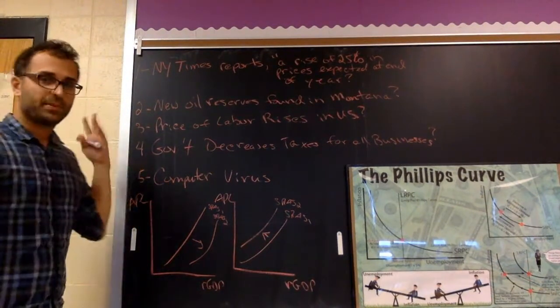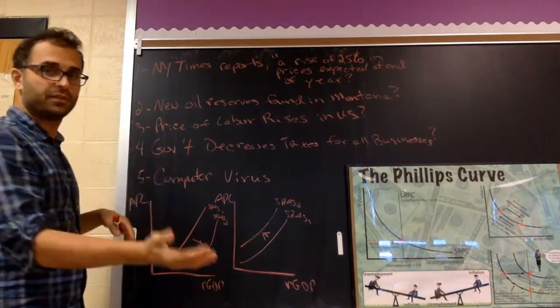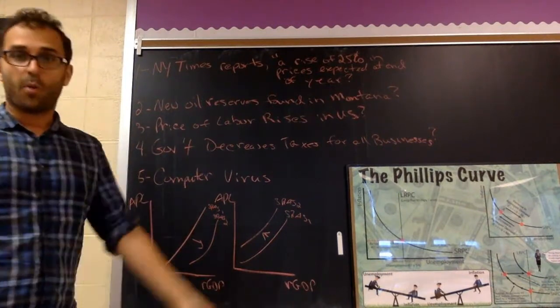A computer virus happens, then aggregate supply shifts to the left. Hope that makes sense. Now you can practice the worksheet. Thank you.